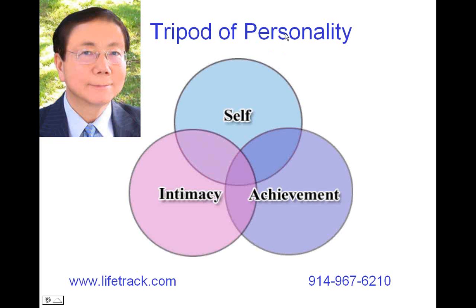The tripod of personality is a model that explains how we think, feel, and act in three spheres that form personality. The self-sphere is the way we think, feel, and act about ourselves. Intimacy is the way a person thinks, feels, and acts in close relationships such as marriage or a comparable relationship. The achievement sphere represents the way a person thinks, feels, and acts at work or in performing challenging, productive, competitive activities that give a sense of satisfaction and meaning in life.